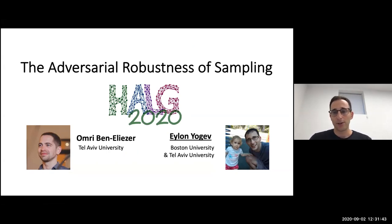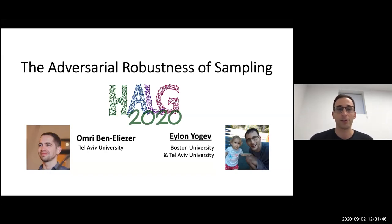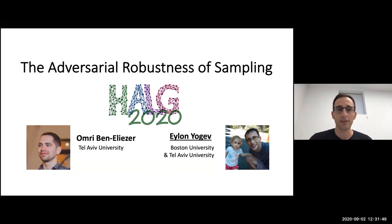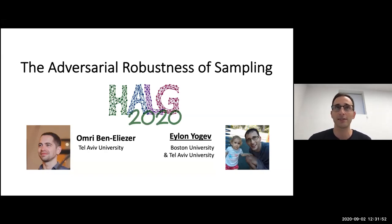I'm going to tell you about this. The first part, we're going to talk generally about adversarial robustness — this is important even regardless of sampling. And then the second part will connect this back to sampling.